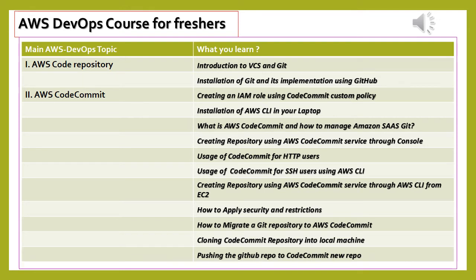Cloning Code Commit Repository into a local machine: your GitHub Code Repository is now in AWS Code Repository, and you will clone it into the local machine. Pushing the GitHub Repo to a new Code Commit Repo: you have already created the AWS Code Repository, the GitHub Repository is in your local Git Repository, and it needs to be pushed to AWS Code Repository through this task.